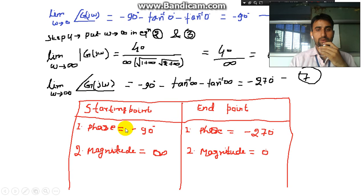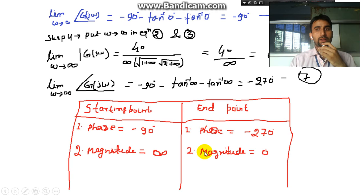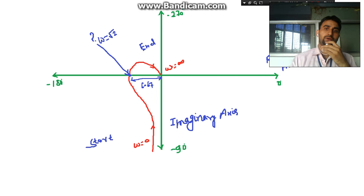We can summarize in a small table: the starting point has magnitude infinity and phase −90°, so the plot starts from infinity along the −90° axis. The ending point has magnitude 0 and phase −270°, so the plot ends at the origin along the −270° axis.